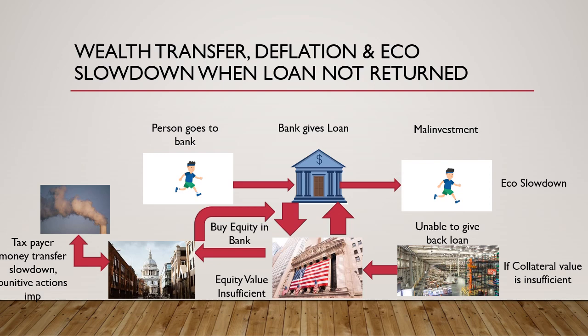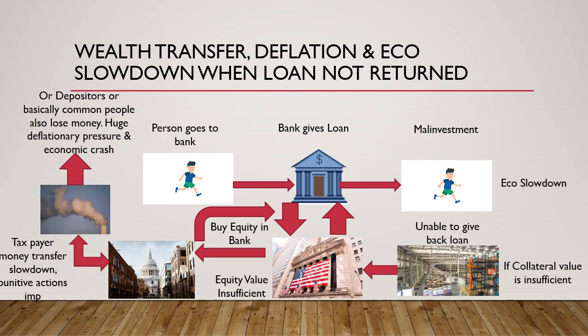Since taxpayers' money is being used to buy equity into the bank, it is very important that punitive actions are taken against those responsible for this mess, otherwise this phenomenon will repeat itself. Federal government intervention is required because otherwise we face a fourth scenario — depositors, the common people, would lose money. The banks would have to write off large amounts of loans from their balance sheets, causing enormous deflationary pressures on the economy and an eventual economic crash.